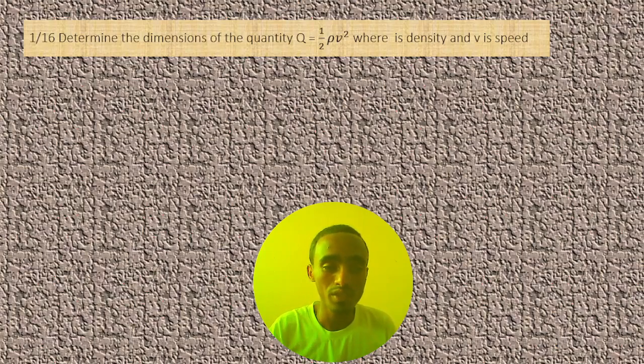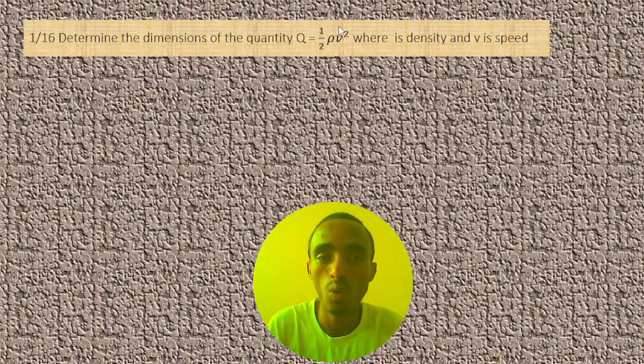For today, now we will solve this problem and finish our tutorial. Determine the dimension of the quantity Q = 1/2 ρv². Here, ρ is density and v is speed.